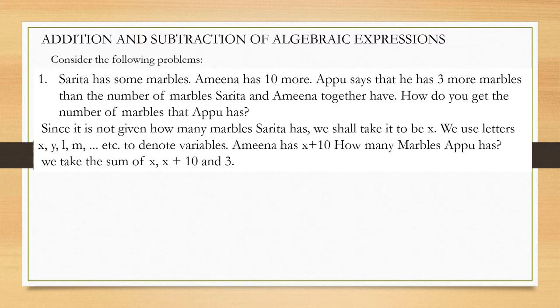Since it is not given how many marbles Sarita has, we shall take it to be x. We use letters x, y, l, m, etc. to denote a variable. Amina has thus x plus 10 marbles. For Appu, we can take the sum of x, x plus 10, and 3. Here, we need to add two expressions together.